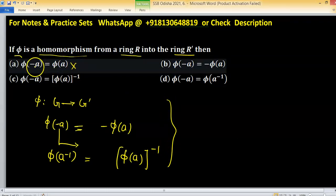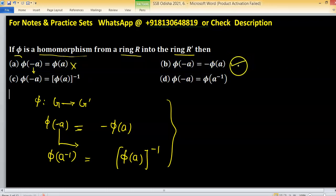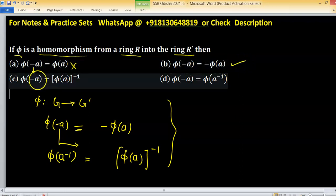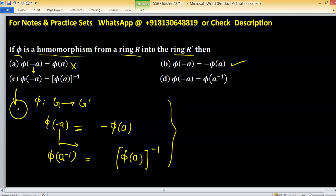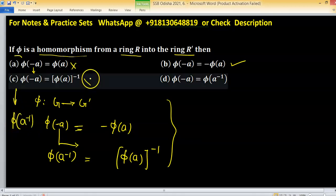Option A is not true because this is additive inverse. In option B, it becomes right. Option C will be right one if phi of A inverse. Then this one option C will be correct, otherwise wrong.